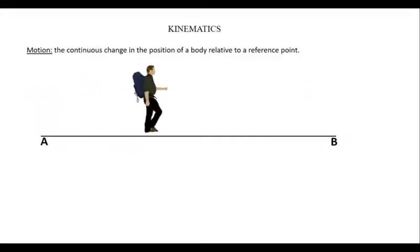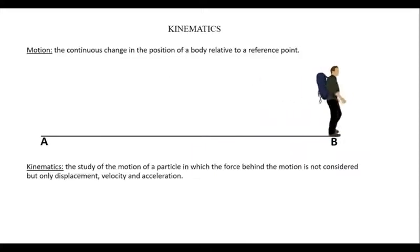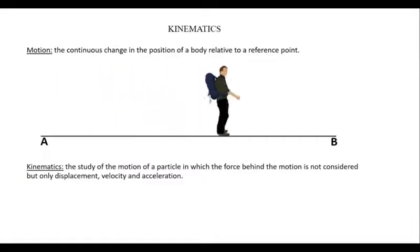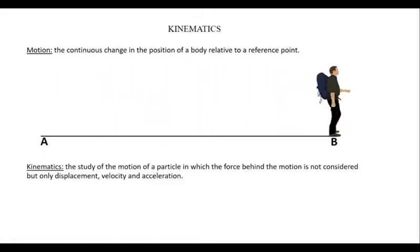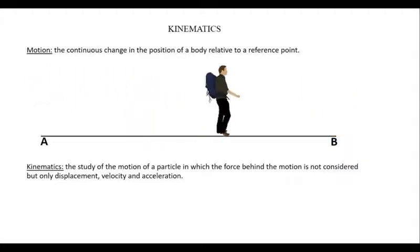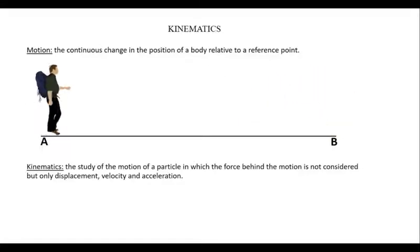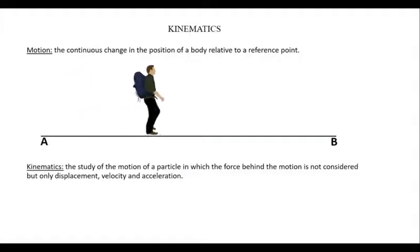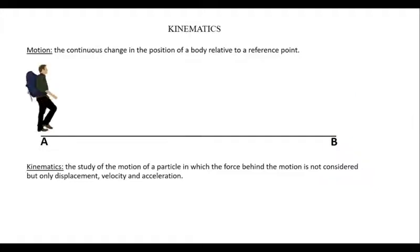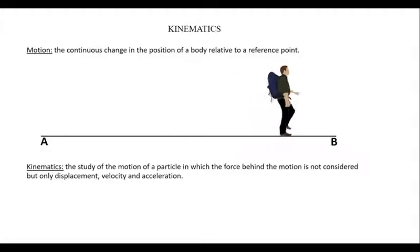A body moving from one point to another point is what we term as motion. Now the definition of kinematics itself: kinematics is the study of the motion of a particle in which the force behind the motion is not considered, but only the displacement, velocity, and acceleration. We are not interested in the force — only the displacement, distance, velocity, and acceleration taken by the particle in motion.